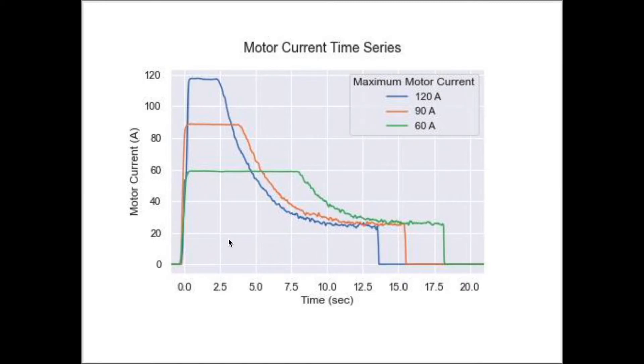we see what we expect, a constant motor current of either 60, 90, or 120 amps up to a certain time, and then the current falls and levels out to the value needed to overcome the wind and rolling resistance.